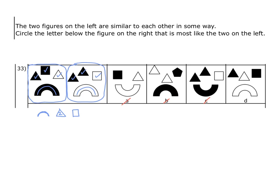This leaves D. We have the two triangles we require, we have the one square, which we also require, and we have this semicircular shape in the correct orientation. Although the shading of all the shapes changed in a variety of ways, these shapes are in the correct orientation and there are the correct number of each of them. This means option D is the correct answer.